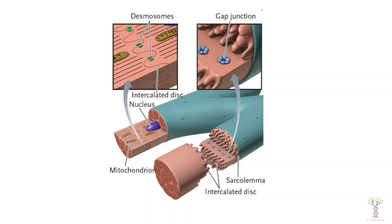The other feature of the intercalated disc is the gap junctions — channels that act like tunnels between two cells, allowing signaling molecules to move between cells very rapidly. Gap junctions in the heart function like electrical synapses, moving ions between cells rapidly to facilitate depolarization. This coordinates the cardiac muscle cells so that the atria contract together and the ventricles contract together, enabling simultaneous depolarization of all muscle fibers.